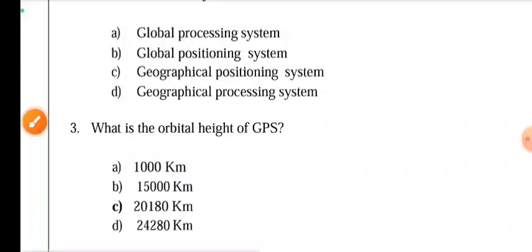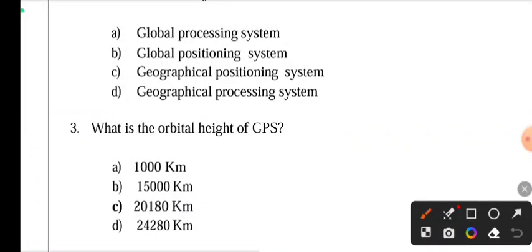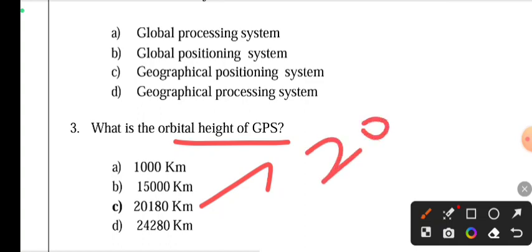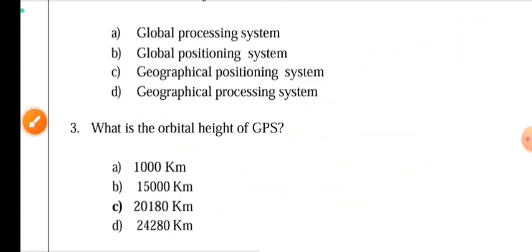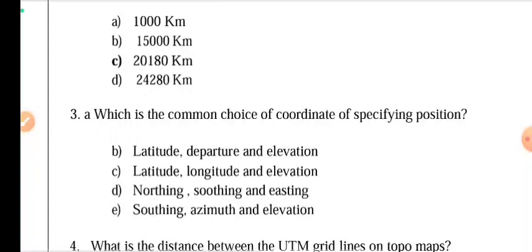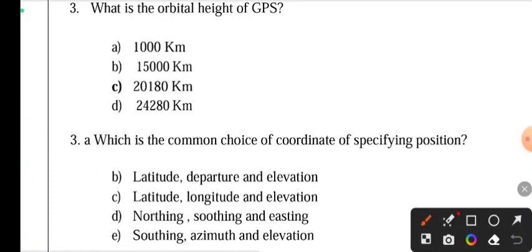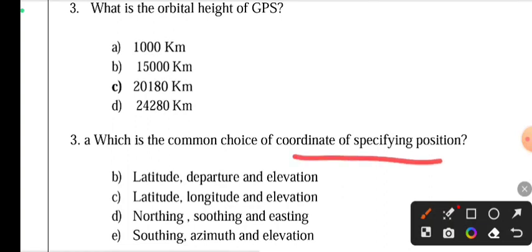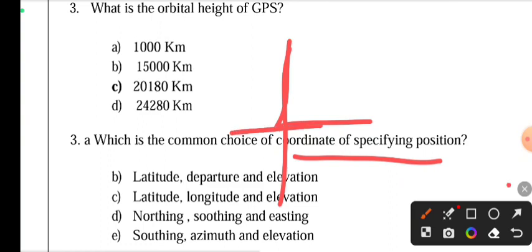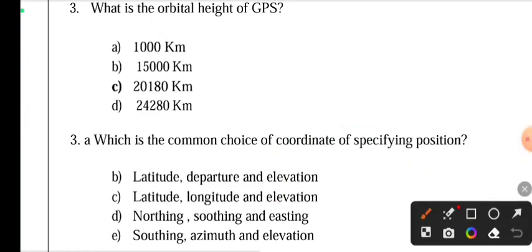Third question: what is the orbital height of GPS? The GPS orbital height is 20,180 km. The GPS orbits at approximately 20,050 km rotation height. Fourth question: what are the common coordinates for a specific position? The common coordinates are latitude, longitude, and elevation.